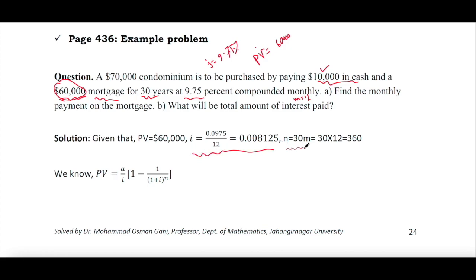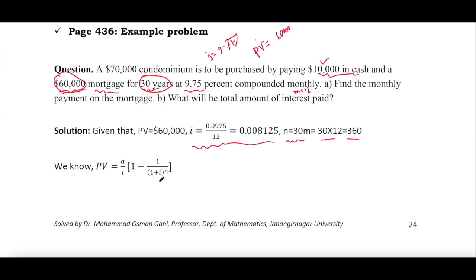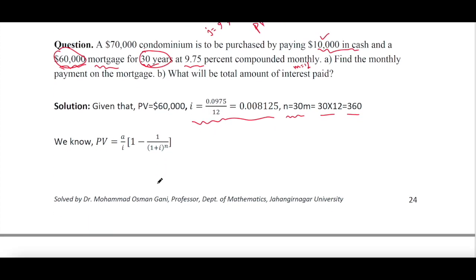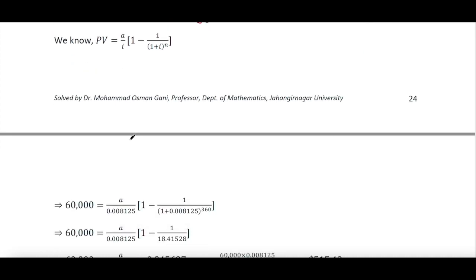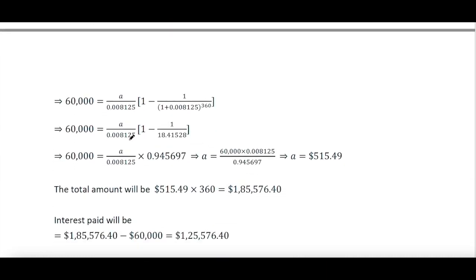N equals the number of installments: 30M, since it continues for 30 years. With M equal to 12, N equals 360, which is the total number of installments. By putting these data into the present value formula, we can easily calculate small a — the payment of each installment.